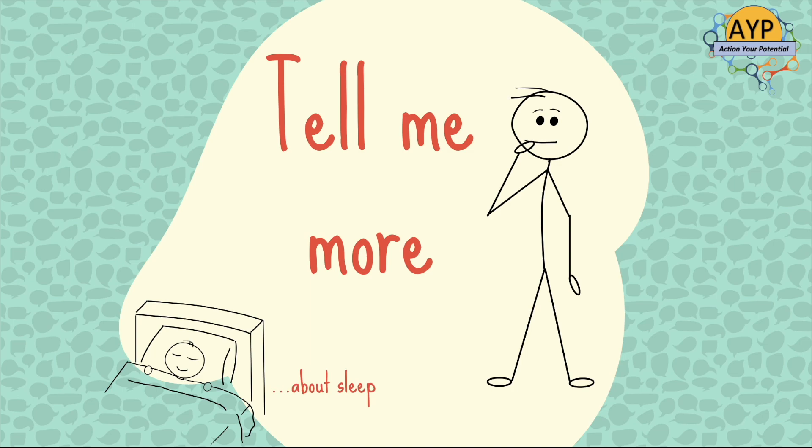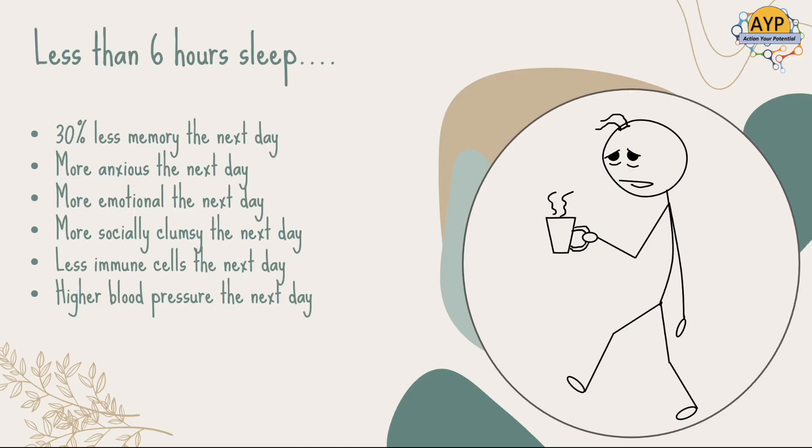Did you know, for example, if you get less than six hours sleep, you've got 30% less memory available the next day? You'd be more anxious the next day, more emotional, and more socially clumsy - more likely to annoy your friends and then overthink that outcome.